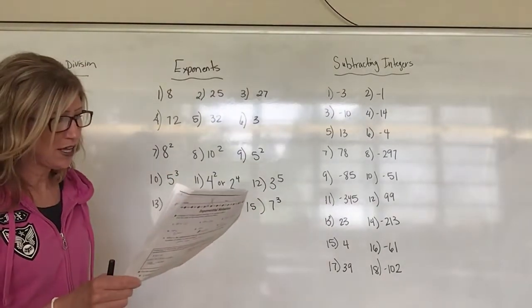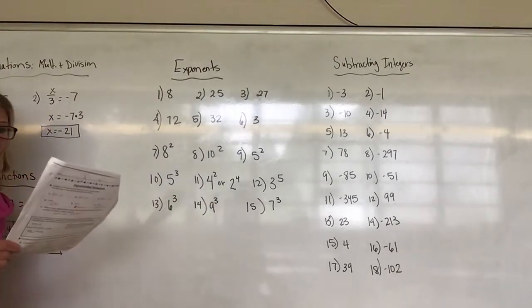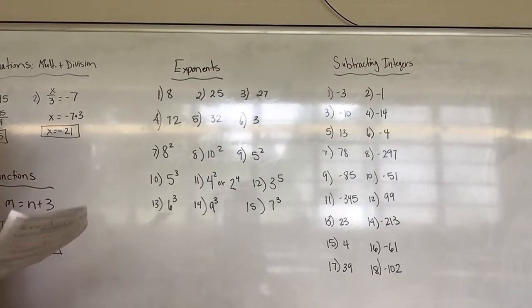But these are the answers. Number 7 is 78, number 8 is negative 297, number 9 is negative 85, number 10 is negative 51, number 11 is negative 345.